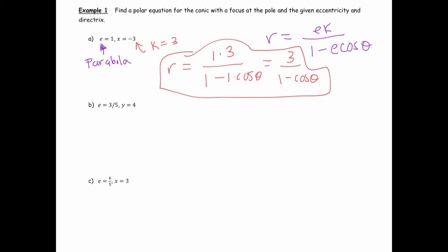Let's try to find an equation for this one here. So e is 3/5. Since e is 3/5, and that's less than 1, we know this is an ellipse.